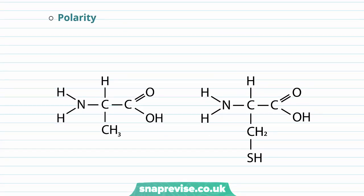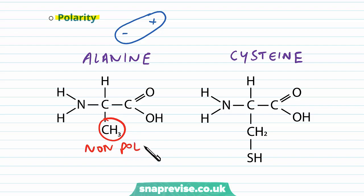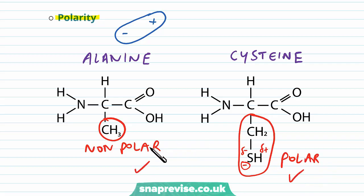The next difference R groups can have is polarity. Polar molecules have an area of positive charge and an area of negative charge. Here we have two amino acids — alanine on the left and cysteine on the right. The R group for alanine is just CH3, which is non-polar, with no charge distribution across it. The R group on cysteine, however, is polar because of the sulfur and hydrogen — the sulfur gets a delta negative and the hydrogen gets a delta positive. This demonstrates that you can have differences in polarity due to R groups.